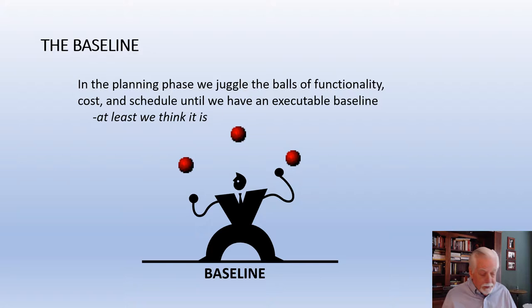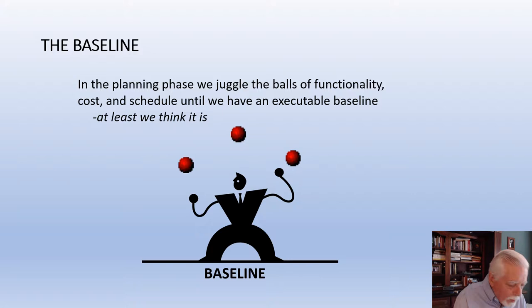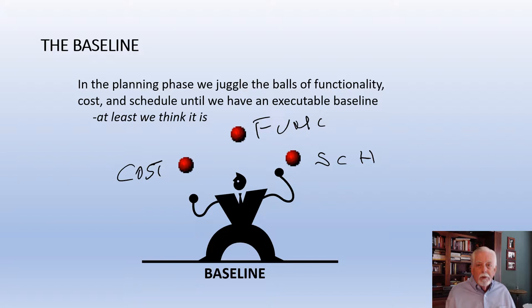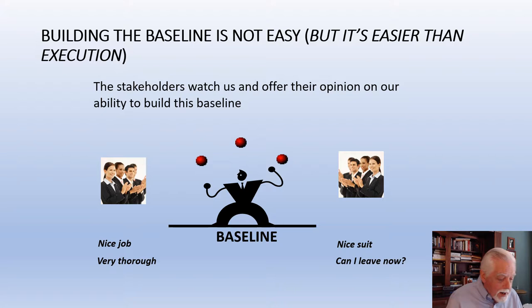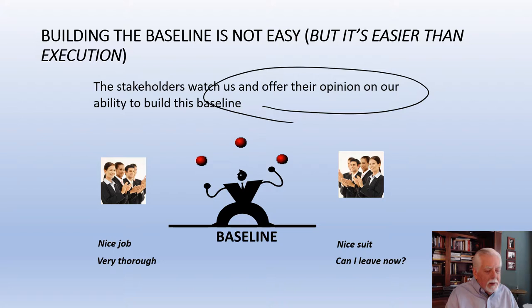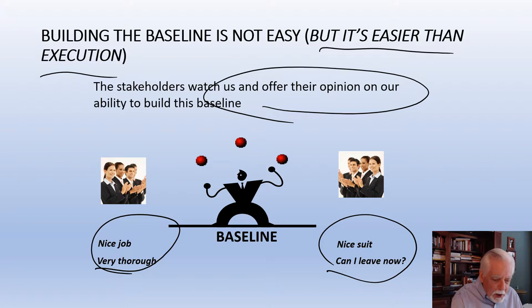Putting the baseline together is not an easy task. Think of jugglers juggling bowling balls — that's an image of putting the plan together. Our project manager is juggling the bowling balls of cost, functionality, and schedule, and balancing those to build the baseline. In the execution phase, things are generally fine — the future hasn't come upon us yet. Our stakeholders say 'nice job, very thorough,' but then ask what happens next.